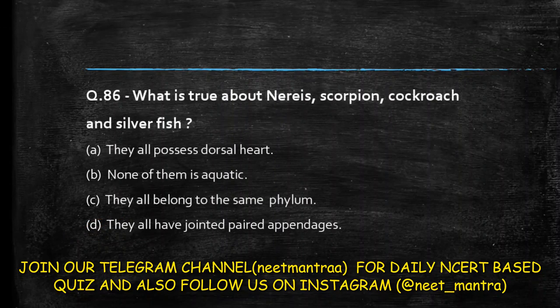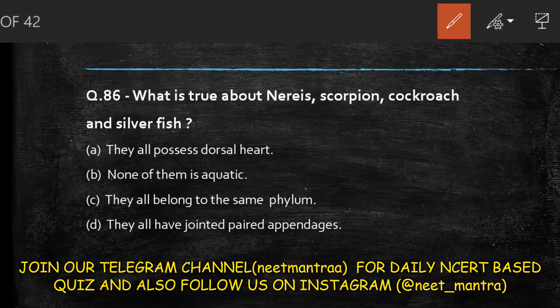Next question: what is true about Cnidaria, scorpion, cockroach, and silverfish? Options are: they all possess a dorsal heart; none of them is aquatic; they all belong to the same phylum; they all have jointed paired appendages. Option D is wrong as they do not all have jointed appendages. They don't all belong to the same phylum. Cnidaria is aquatic so that option is wrong. The answer is option A: they all possess a dorsal heart.